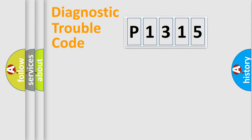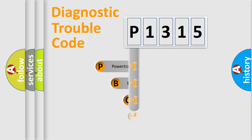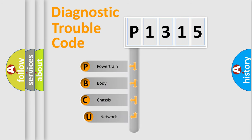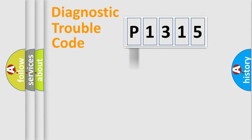Let's do this. First, let's look at the history of diagnostic fault code composition according to the OBD2 protocol, which is unified for all automakers since 2000. We divide the electric system of the automobile into four basic units: Powertrain, body, chassis, and network.